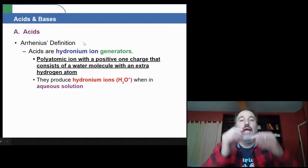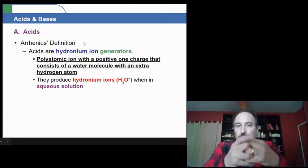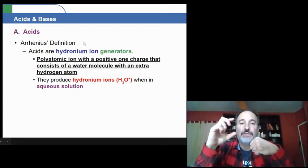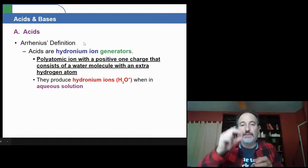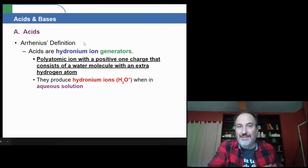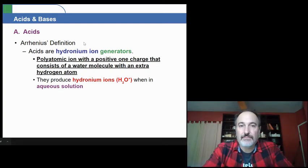So basically, they produce H3O positive ions when in aqueous solution. Now, what does this mean? It means that when you have an acid and you dissolve it in water, the acid is going to lose a hydrogen positive ion, H+. And that H+ ion is going to be lost because it's going to be attached to a water molecule. And you're going to end up with an H3O molecule. And since it has a charge, it is a polyatomic ion.